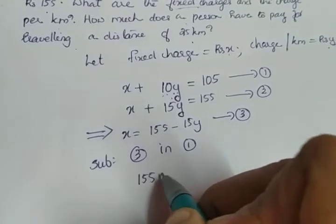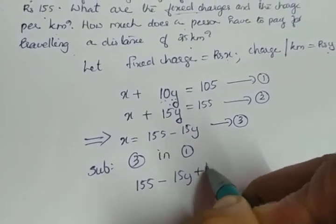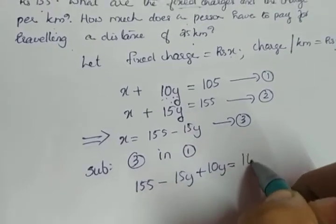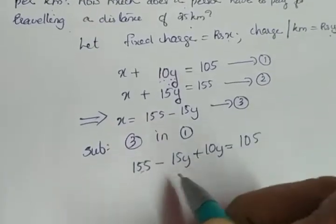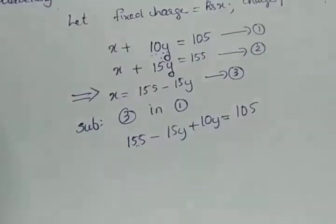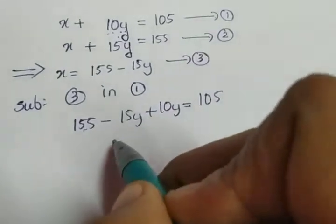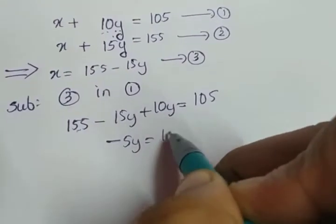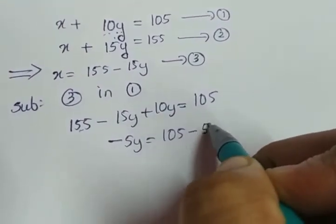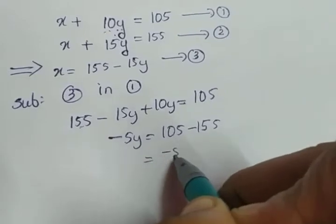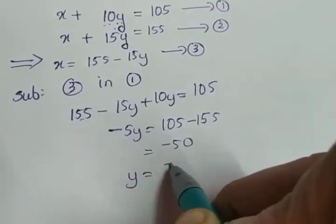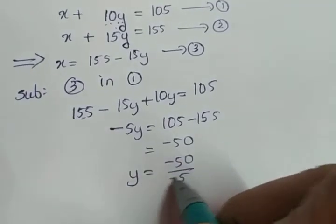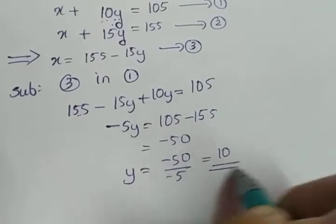What we are getting: 155 minus 15y plus 10y is equal to 105. Take this constant to the right side. The balance is minus 15y plus 10y, that is minus 5y, equal to 105 minus 155, which is minus 50. So y is equal to minus 50 by minus 5, which gives you the value 10.